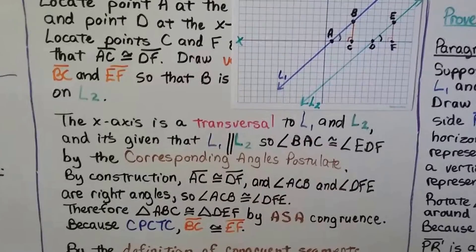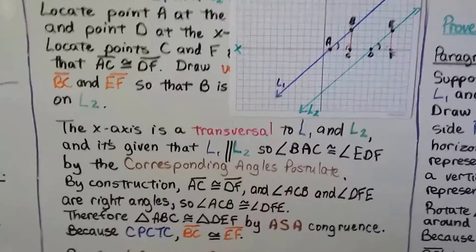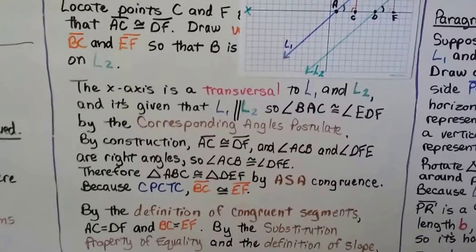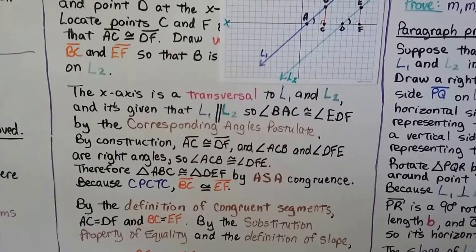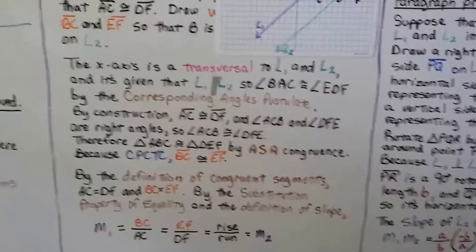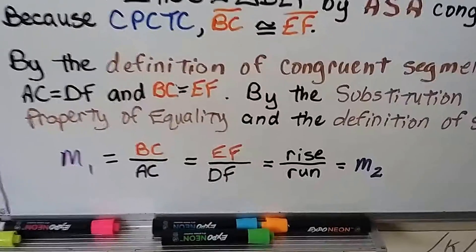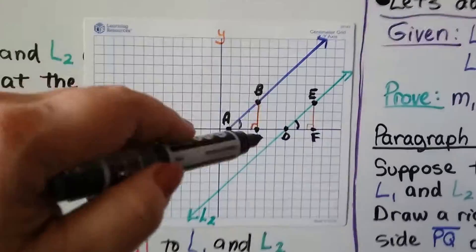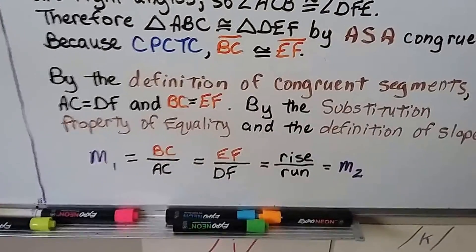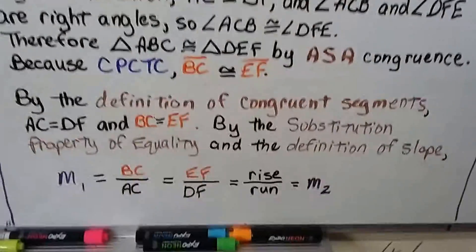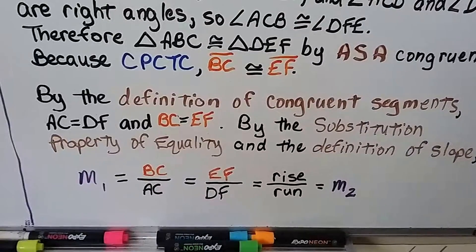Because of CPCTC — corresponding parts of congruent triangles are congruent — segment BC is congruent to segment EF. By the definition of congruent segments, AC equals DF and BC equals EF. By the substitution property of equality and the definition of slope, m sub 1 equals BC over AC (rise over run), which equals EF over DF, which equals m sub 2. So m sub 1 equals m sub 2, and we proved the first statement.